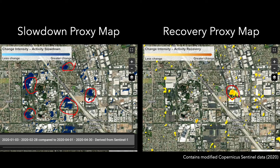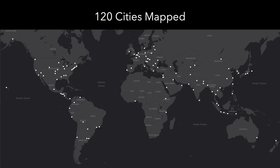Each pixel here measures about 30 by 30 meters. We generated such maps for 120 cities in the world. Mostly, we used SAR data from the Copernicus Sentinel-1 satellites operated by ESA. We also used JAXA's ALOS-2 SAR data for a limited number of cities. This turned out to be an enormous dataset — 120 cities at every 30 meters — making it impossible for us to look at every corner of every street.